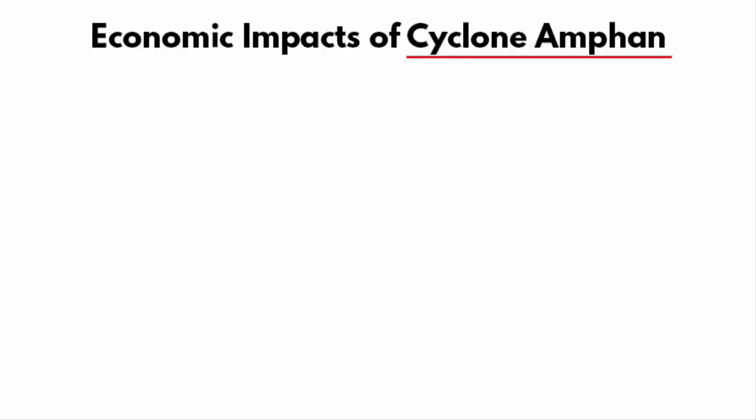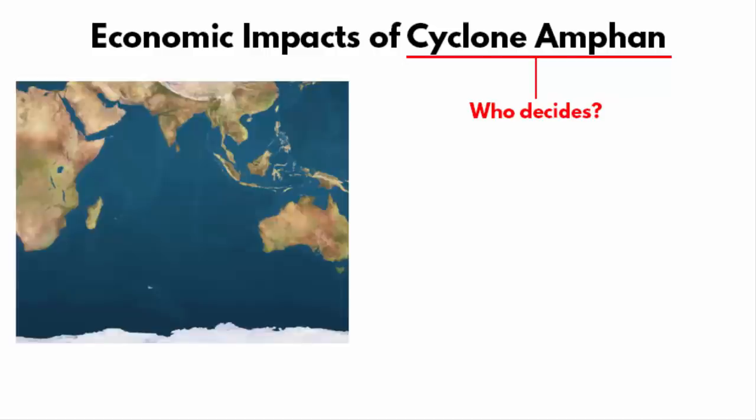Many of you have asked who gets to decide what name is given to a particular cyclone and what the system behind it is. It purely depends on the region where the cyclone occurs. For the Indian Ocean region, naming of cyclones began in the year 2000 and a formula was agreed in 2004.